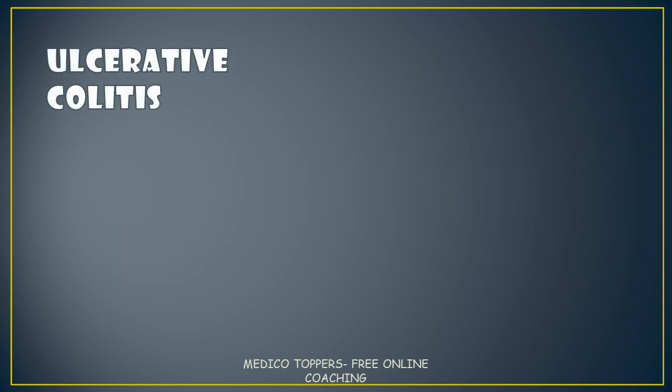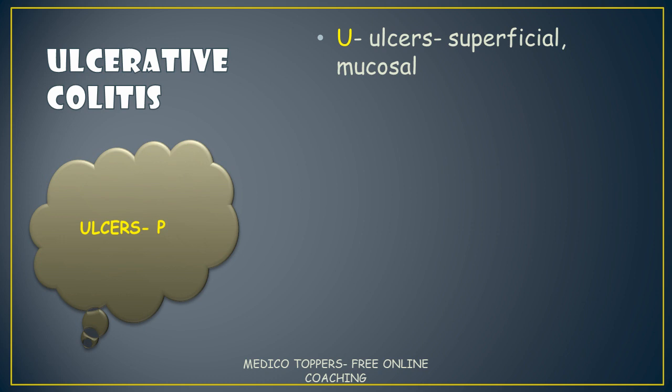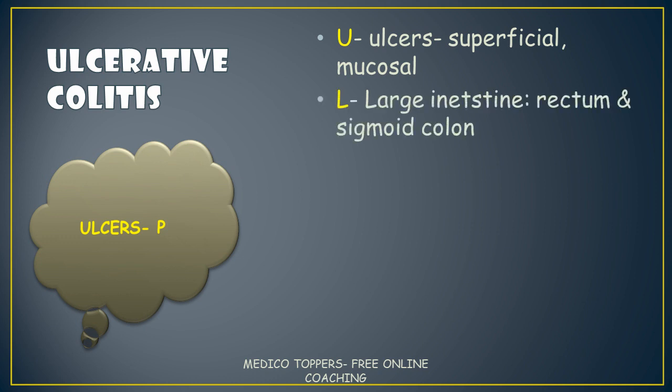Next comes ulcerative colitis. The mnemonic is ULCERS-P. For U, the ulcers will be superficial and mucosal — this is a major difference from Crohn's disease. Crohn's disease involves everything very deeply, whereas in ulcerative colitis everything is very superficial. L for large intestine — it will affect the large intestine, mainly the rectum and sigmoid colon.